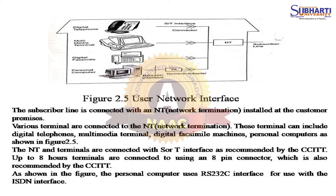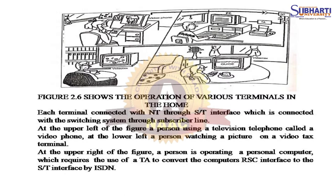ISDN concept can be summarized in two statements. The subscriber line is connected with a network terminal installed at the customer premises. Various terminals are connected to the network terminal. These terminals include digital telephone, multimedia terminal, digital facsimile, and personal computers. The network terminal and terminal are connected with S/T interface as recommended by the CCITT. Up to 8 terminals can be connected using an 8-pin connector. The personal computer uses RS-232C interface for connection with the ISDN interface. Each terminal is connected with the network terminal through S/T interface, which is connected with the switching system through the subscriber line.